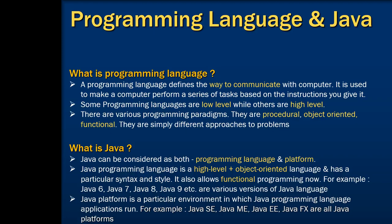Java platform is a particular environment in which Java programming language applications run. For example, Java SE (Standard Edition), Java ME (Micro Edition), Java EE (Enterprise Edition), and Java FX — they all are various Java platforms.